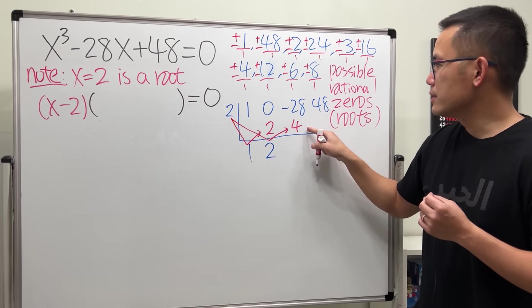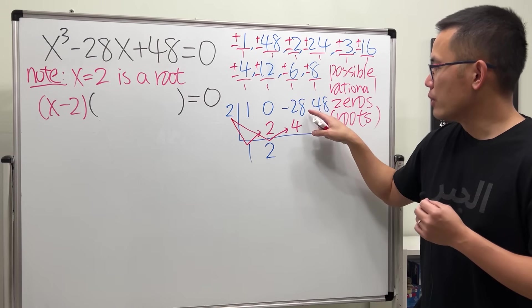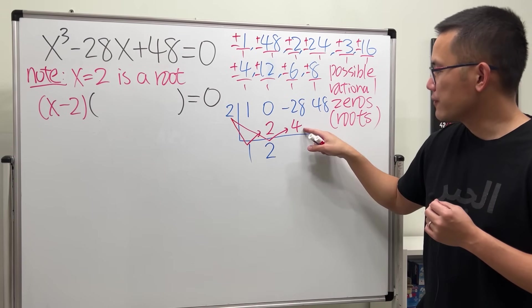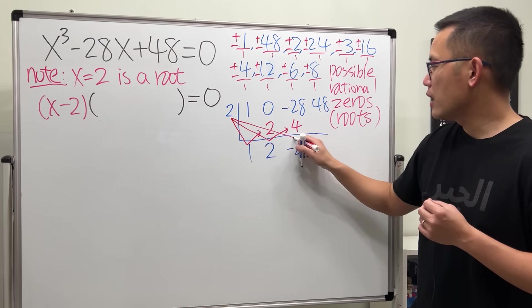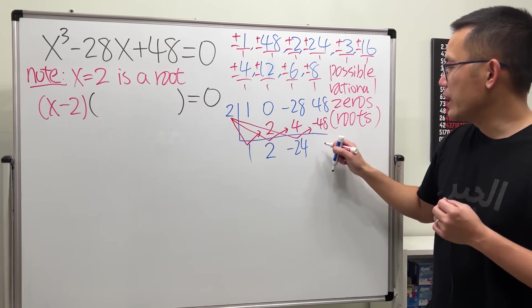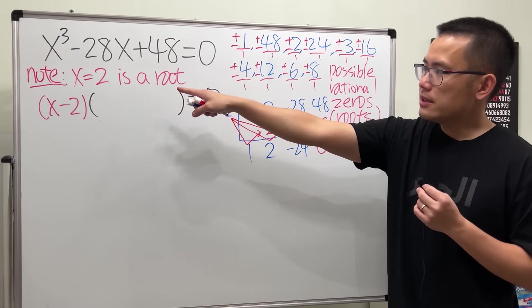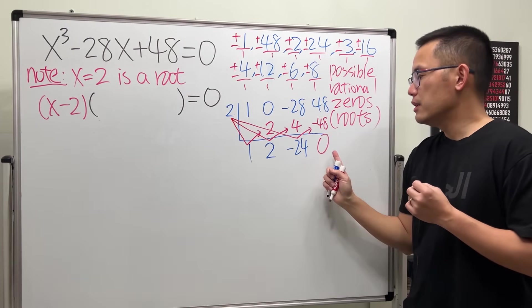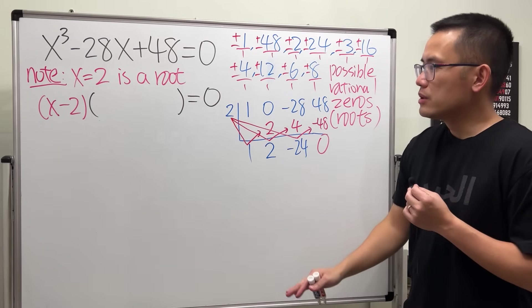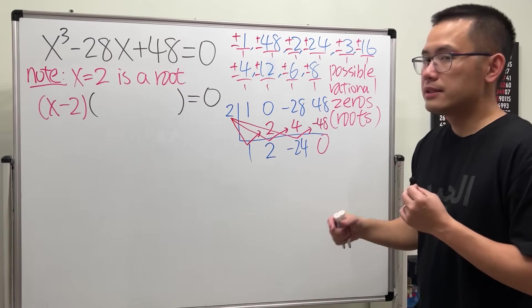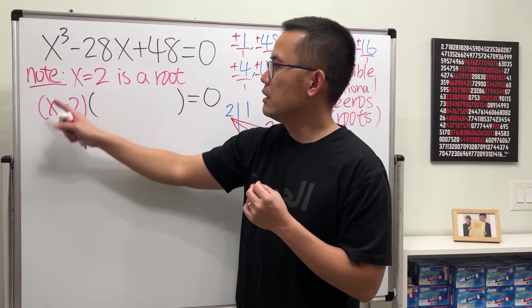And then once again you work that out. For synthetic division we are adding them, so negative 28 plus 4 is negative 24. One more time: we have negative 48. When we add, we get 0. If x equals 2 is indeed the solution, then the remainder here must be 0. This final number must be 0.